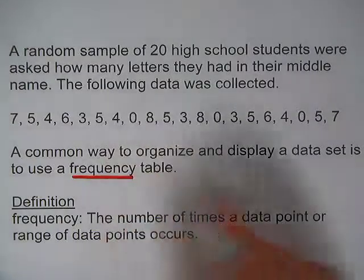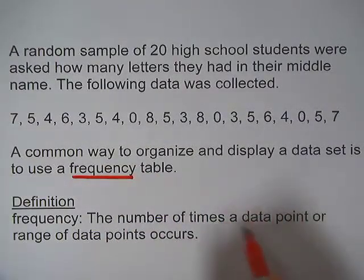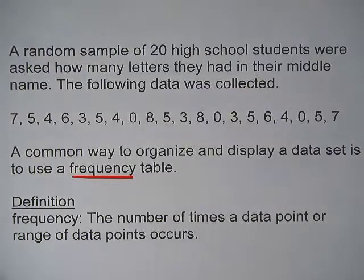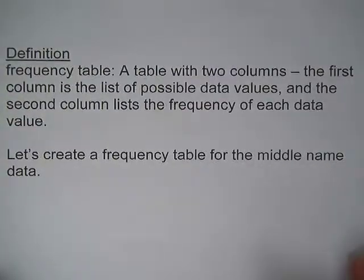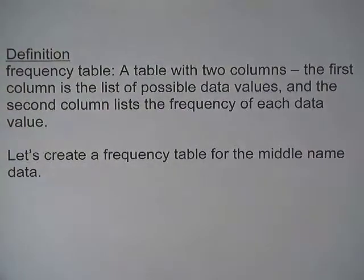In this case we're just going to look at how many times just one data point occurs and then we'll look at the other case in a minute. So then a frequency table is a table with two columns. The first column is the list of possible data values, and the second column lists the frequency of each data value. So let's create a frequency table for the middle name data.